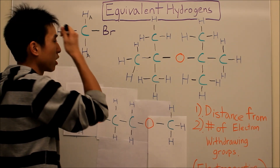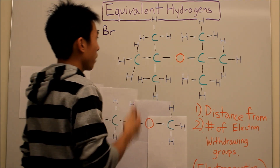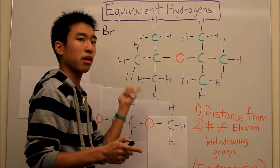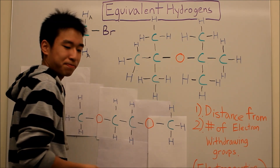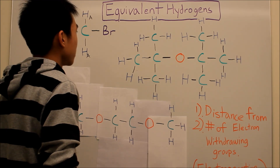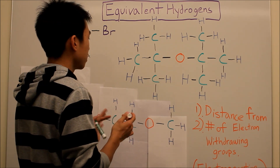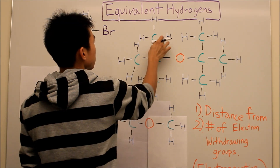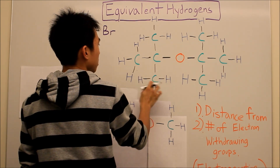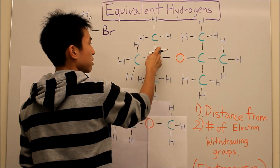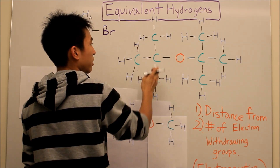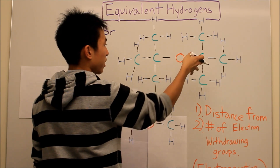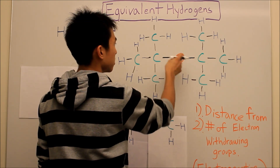Next, this molecule here. I want you to pause the screen and try to label the number of different groups of hydrogens in this molecule. So you might say that these three and these three are probably the same, because they look like they're equal distance away from the oxygen — the electronegative group. And then these other hydrogens are also the same distance away from the other oxygen.